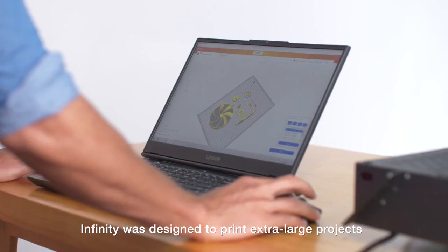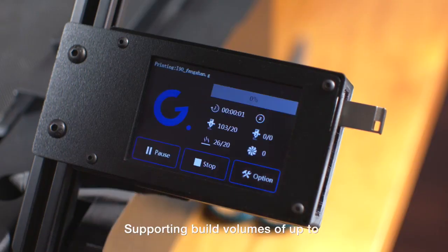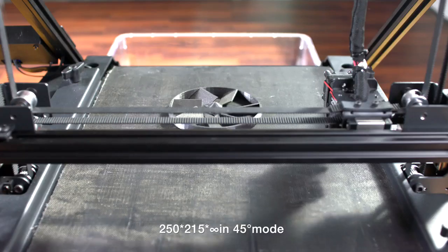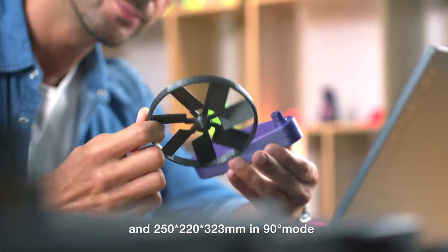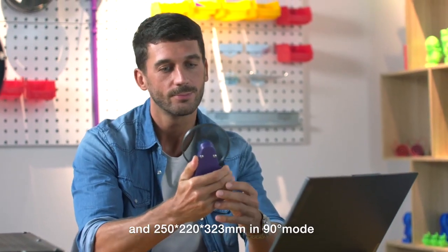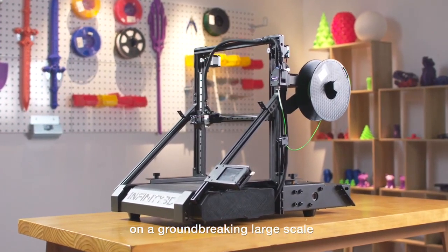Infinity was designed to print extra large projects that fit the size of big dreams. Supporting build volumes of up to 250 x 215 x infinite in 45 degree mode and 250 x 220 x 323 mm in 90 degree mode, users can print whatever they desire on a groundbreaking large scale.